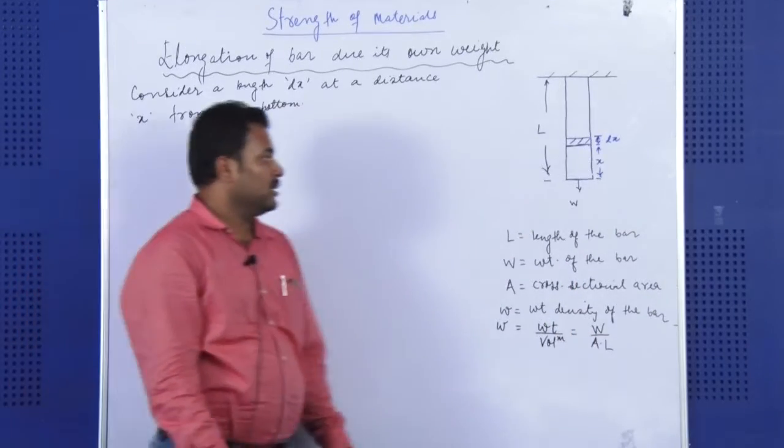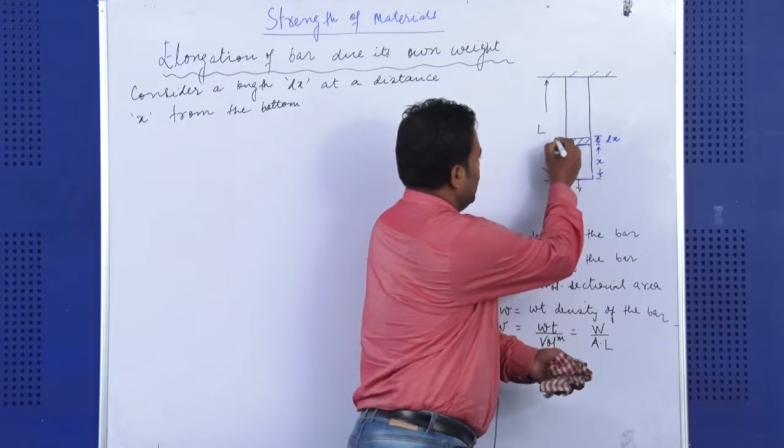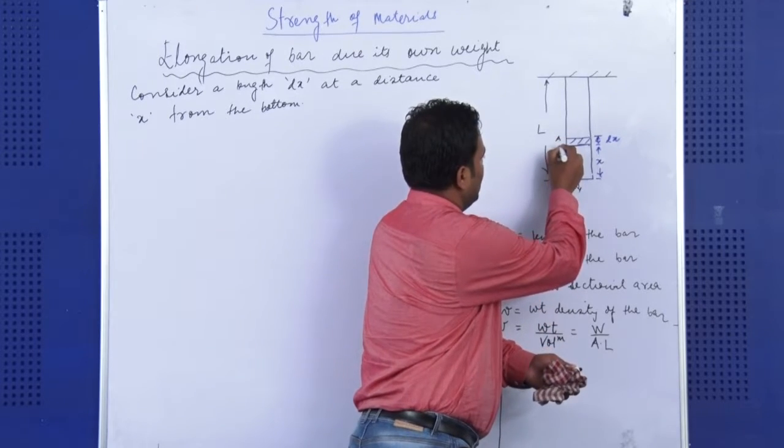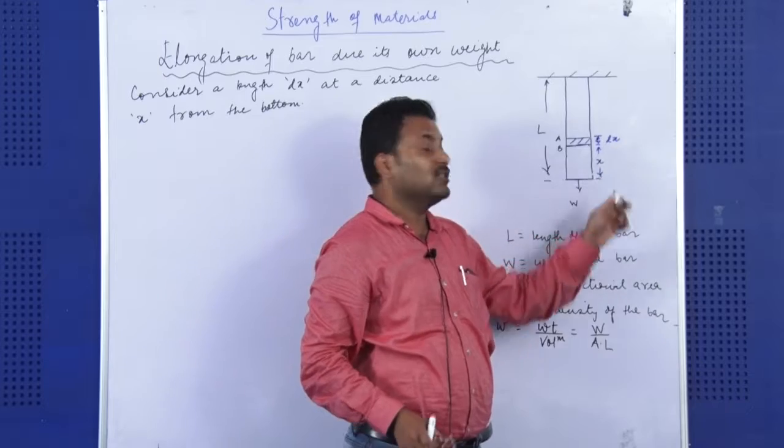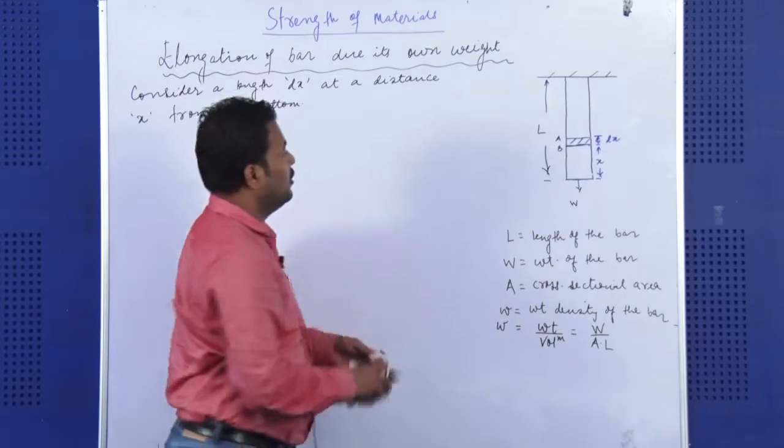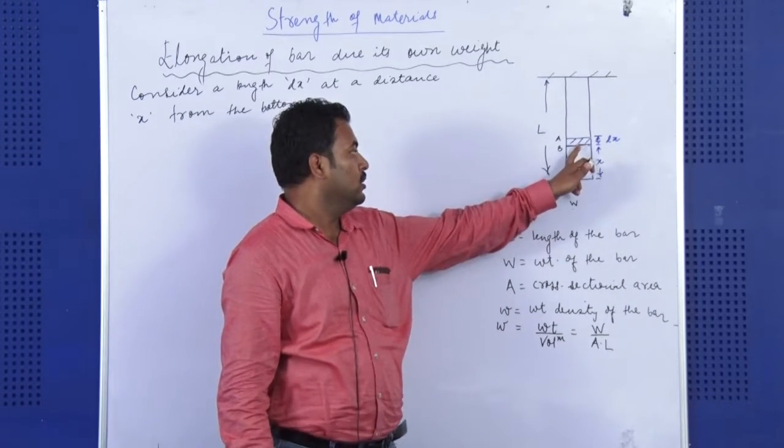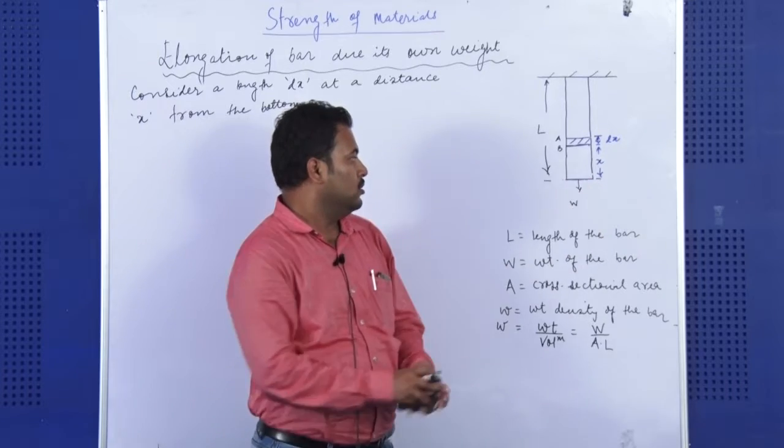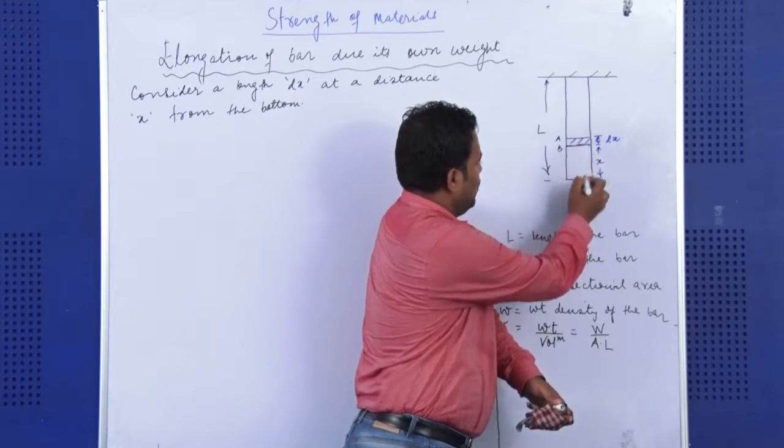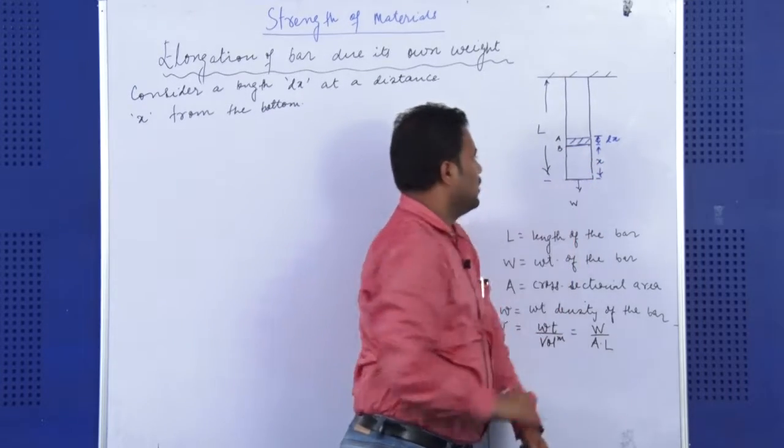Let me write it. I have considered a length DX, if it is denoted by AB. I have considered a length DX at a distance X from the bottom. Now I will try to find out the elongation of this length DX due to the weight acting, due to this part.